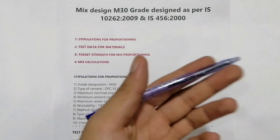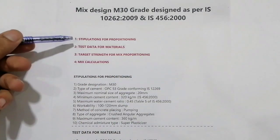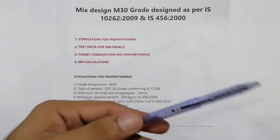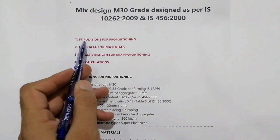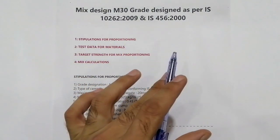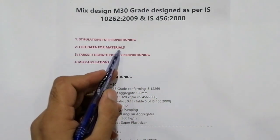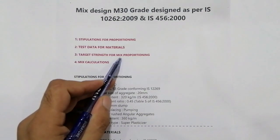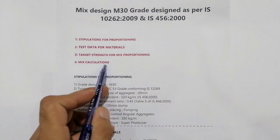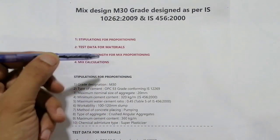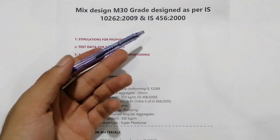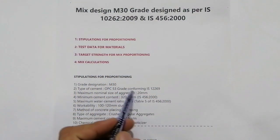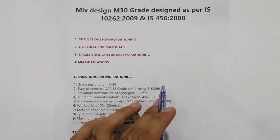Before designing M30 grade concrete or M25, M35, M40, M45, etc., you should remember these four steps, then you will be able to design any grade of concrete. The first one is stipulations for proportioning. The second one is test data for materials. The third one is target strength for mix proportioning. The last one is mix calculation.